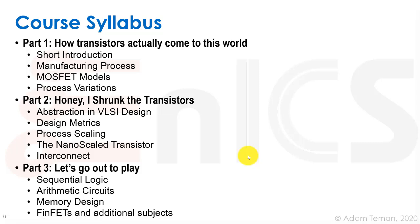The course has three main parts. The first part is called 'How transistors actually come to this world.' We start with this short introduction, then move to the CMOS manufacturing process — how we actually build these chips. Once we've built the devices, we need to model them for simulation, so we cover MOSFET models. Finally, because these processes are very complex, there is variation, and we need to know how to deal with it — that's the section on process variation.